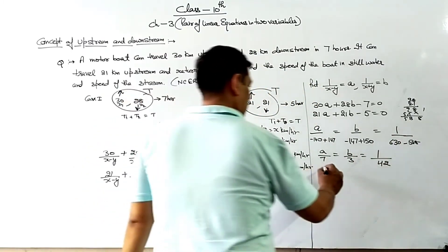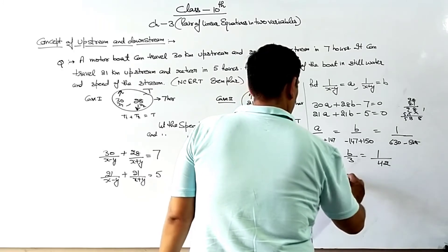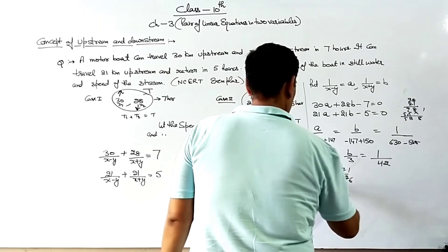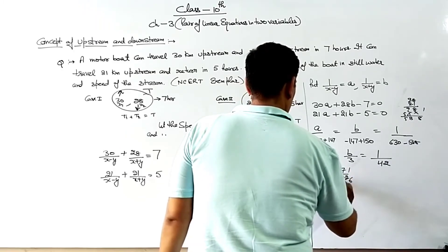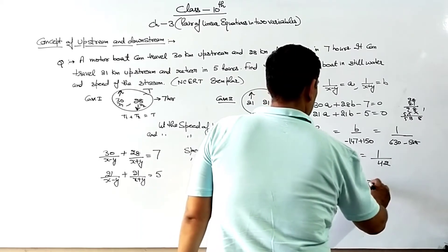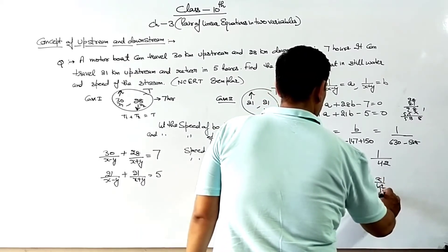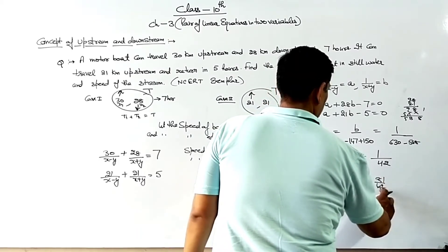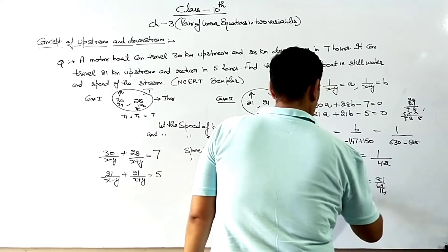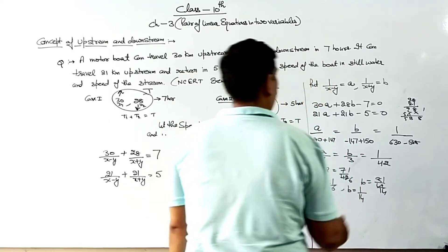So we get A by 7 equals B by 3 equals 1 by 42. Therefore, A is equal to 7 by 42, which simplifies to 1 by 6. And B is equal to 3 by 42, which simplifies to 1 by 14.